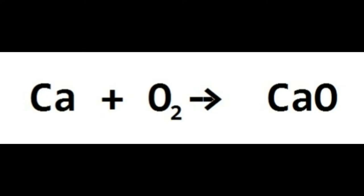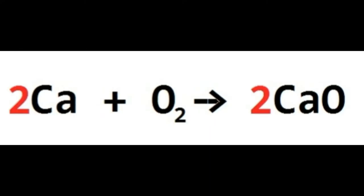Let's balance the calcium oxide equation. You've got two oxygens on the right and one on the left. If you put a coefficient of 2 in front of CaO, then two times one gives two oxygens. Now put a 2 in front of Ca on the left — two times one gives two calciums. They're conjoined like conjoined twins — you can't squeeze a number in between the elements of a compound; you can only put it in front of the whole compound.